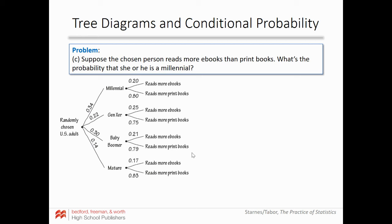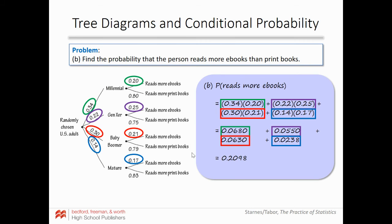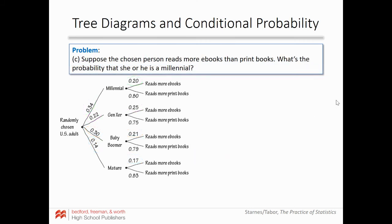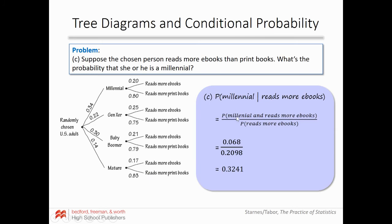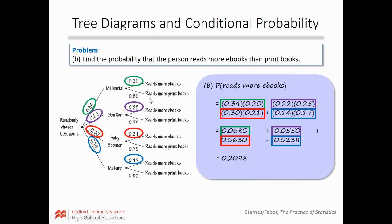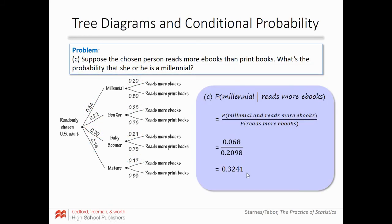Now, suppose the chosen person reads more ebooks than print books. What's the probability they are a Millennial? We just found the probability of reading more ebooks is 0.2098 — that's our denominator since we know they read more ebooks. The numerator is P(Millennial and more ebooks) = 0.34 × 0.20 = 0.068. So P(Millennial | more ebooks) = 0.068 / 0.2098.